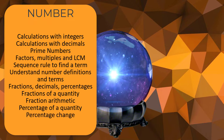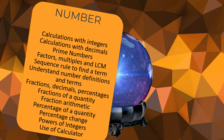Percentage change: given a before and after price, can you work out what percentage change has happened? Powers of integers: knowing what two cubed or three to the power five is — you can type that into your calculator using the power key. And finally, use of calculator: expect a big calculation to type carefully in and get the right answer.